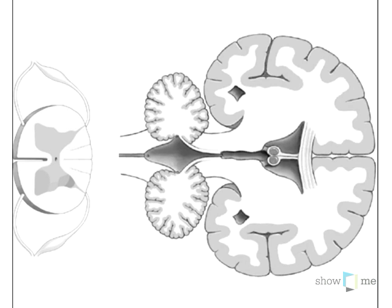In this video I want to discuss the third of the spinothalamic pathways, which is a little bit more simple than the others discussed. This one deals mostly with temperature on the right side of your body, so we begin on the right side with temperature coming in.